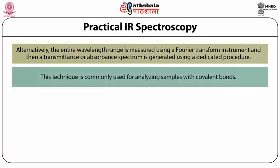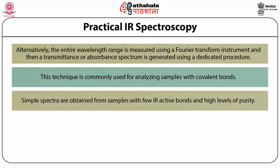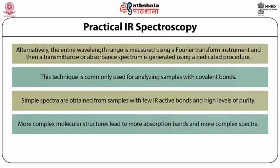Measurement can be achieved by scanning the wavelength range using a monochromator. Alternatively, the entire wavelength range is measured using a Fourier transform instrument, and then a transmittance or absorbance spectrum is generated using a dedicated procedure. This technique is commonly used for analyzing samples with covalent bonds. Simple spectra are obtained from samples with few IR active bonds and high purity, while more complex molecular structures lead to more absorption bands and more complex spectra.